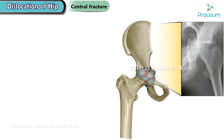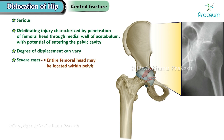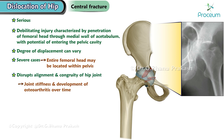Central fracture dislocation of the hip. It's a serious and debilitating injury, characterized by the penetration of the femoral head through the medial wall of the acetabulum, with the potential of entering the pelvic cavity. The degree of displacement can vary, and in severe cases the entire femoral head may be located within the pelvis. This injury significantly disrupts the alignment and congruity of the hip joint, resulting in joint stiffness and the development of osteoarthritis over time.